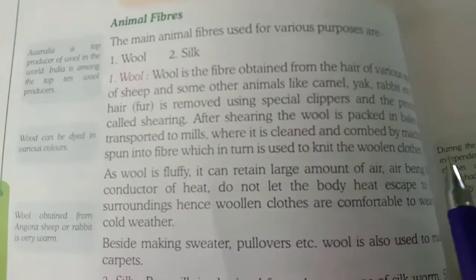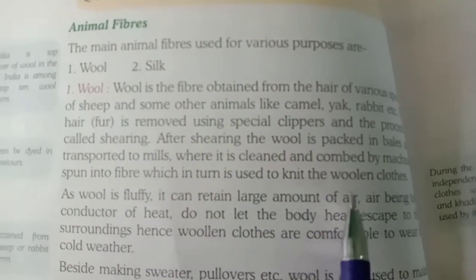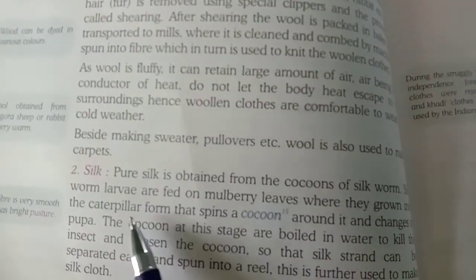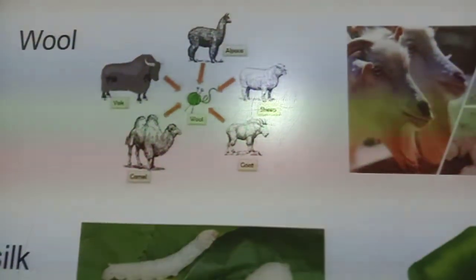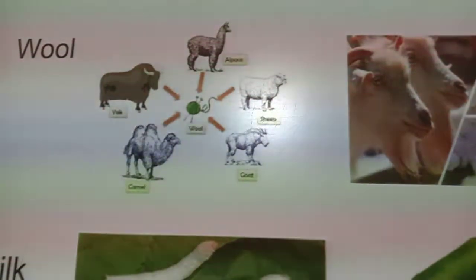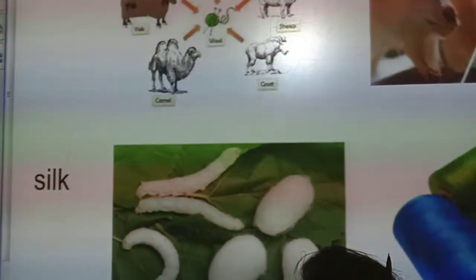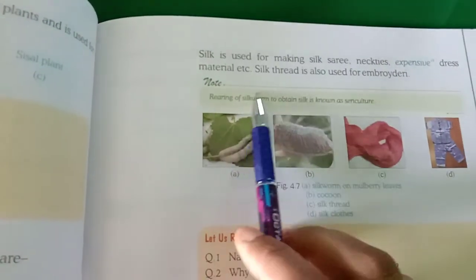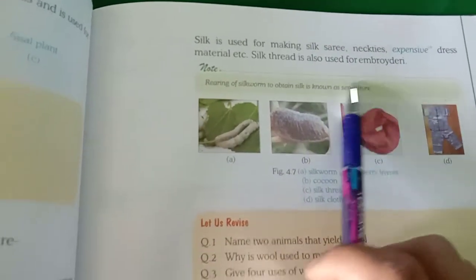Wool is basically obtained from the hair of various types of animals like sheep and camel. Wool is generally used for making woolen cloths, sweaters, and pullovers. Then silk — silk is obtained from cocoons of the silkworm, which is a type of insect. From that insect we get silk fiber. You can see here wool we get from animals like sheep, camel, and goat. Silk is used for making silk saris, expensive dress materials, etc. Silk thread is also used for embroidering.